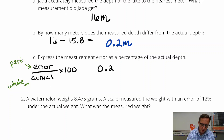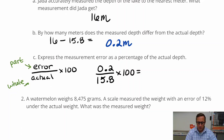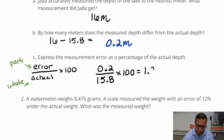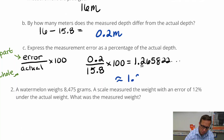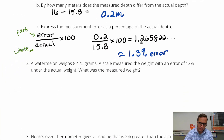So we're going to do 0.2 divided by 15.8, then multiply that by 100. I get 1.2658-something. I think one decimal place should do — that 2 is going to round up. So this is going to be about 1.3% error. That's not too bad of an error.